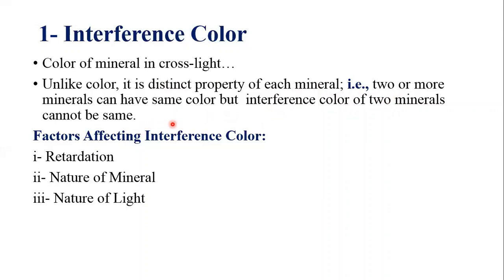Two or more minerals can have the same color in plane polarized light, but the interference color of two minerals cannot be the same, because each mineral has its own distinct, specific interference color and no two minerals share the same interference color. That is why we say interference color is the distinct property of each mineral. Factors affecting interference color include retardation, nature of mineral, and nature of light.